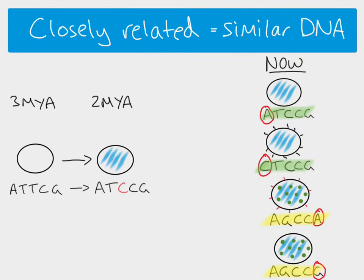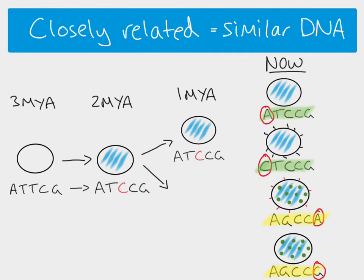At some point, speciation events occur, so this species separated through a process of speciation into two different species — this happened between two million years and one million years ago. Looking at the DNA sequences of those organisms a million years ago, the sequence in one species is the same — that doesn't mean the genome hasn't changed, we're just sampling a section of it. In the other species that arose from the speciation event, there has been a change — another base is now different.